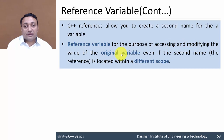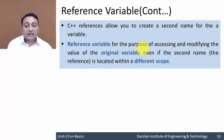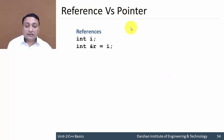In the previous example, incrementing 'answer' affected the original variable. Even if the second name is located within a different scope — for example, inside a function — if you change the reference variable, the original variable in the main function will also be affected. This brings up the question: what is the difference between a reference and a pointer?